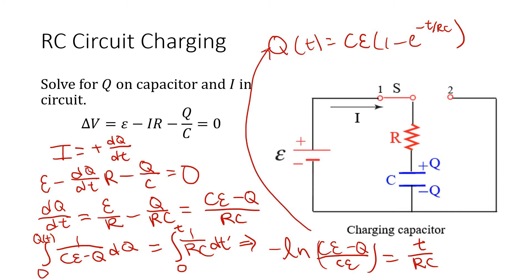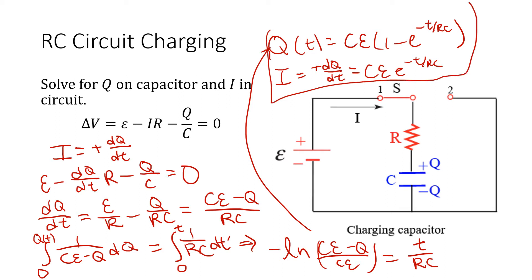To solve for i, we said that i is the positive dq/dt, so we just take the derivative. We get i = (ε/R) · e^(−t/RC). And that's how you solve for a charging RC circuit.